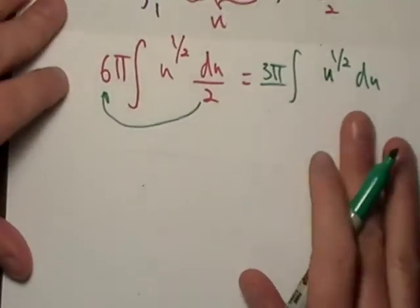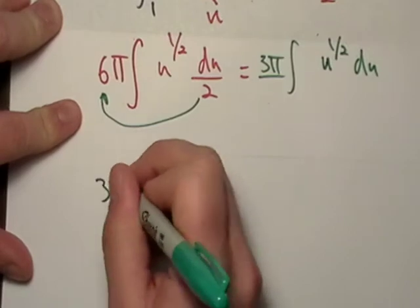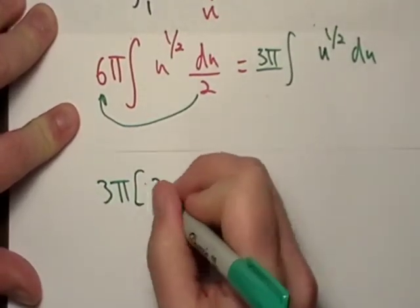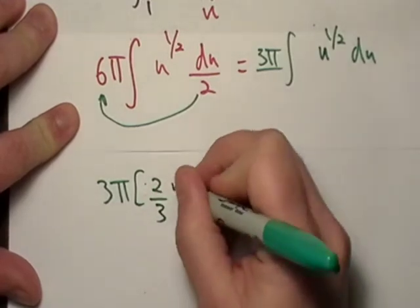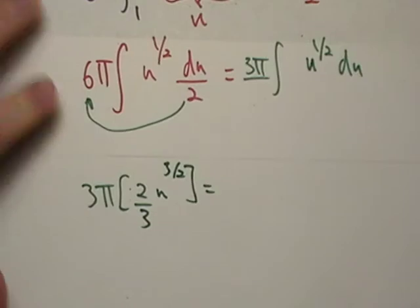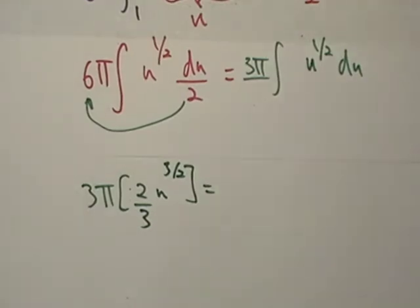Okay, so I'm actually going to yank the 1/2 out and that's going to give me 3π ∫u^(1/2) du. Oh god, I'm running out of time. Okay, running out of time. So I got 3π times 2/3 u^(3/2). Okay, no problem.